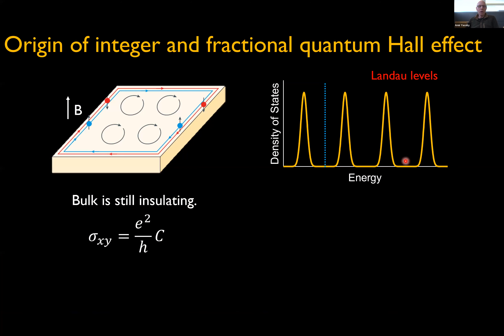Let's start by reminding everybody about the integer and fractional quantum Hall effects. The integer quantum Hall effect results from a two-dimensional electron system subject to a very strong perpendicular magnetic field. Under these conditions, Landau levels form, and when the Fermi energy lies in the gap between Landau levels, the transverse conductivity gets quantized in units of e² / h with an integer multiplicative factor.